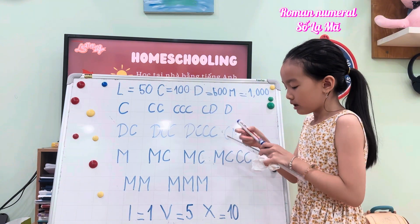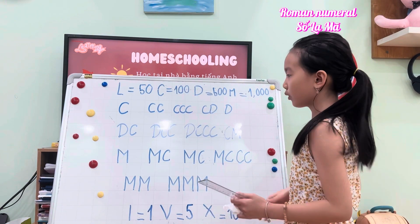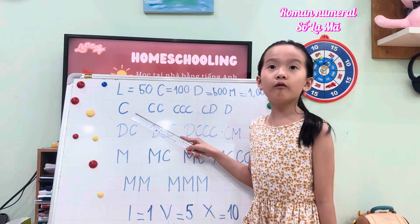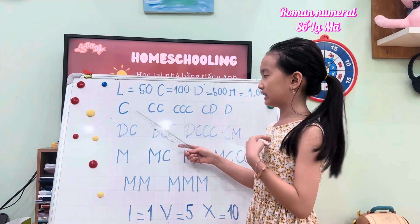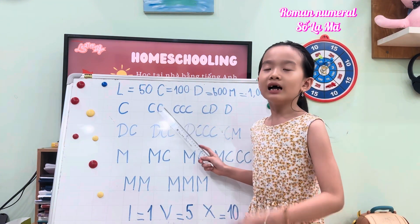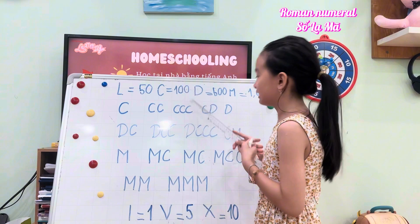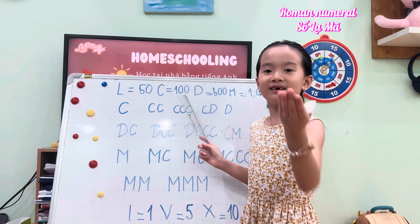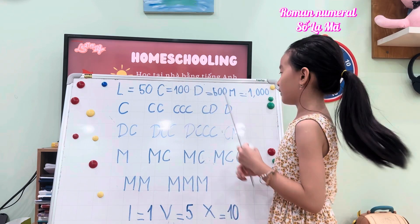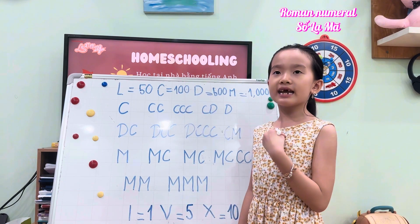Now let's take it up a notch and we're going to look at some Roman numerals. What would CC be? CC equals 200. What about CCC? CCC equals 300. What about CD? CD equals 400.